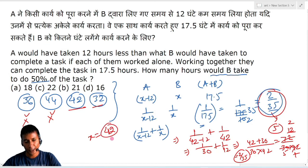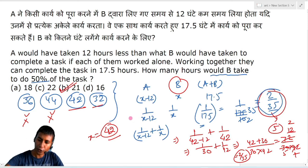So you got the value of X, and it came out to be 42. It means B alone will do the work in 42 hours, so to do 50% of the work, how much time does he need? Just half, that implies option number B, 21 hours. So thanks for watching the video.